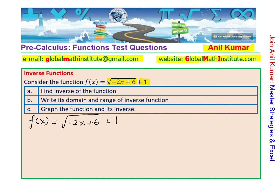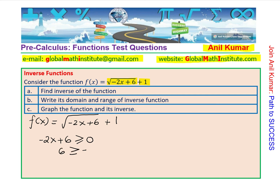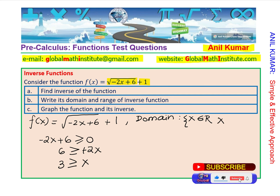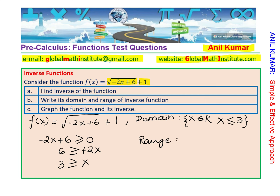As far as the domain is concerned, within the radical sign, -2x + 6 must be greater than or equal to 0. Solving this: 6 ≥ -2x, which gives 2x ≤ 6, so x ≤ 3. That gives the domain: x ∈ ℝ where x ≤ 3. As for the range, the minimum value is 1, so y ∈ ℝ where y ≥ 1.